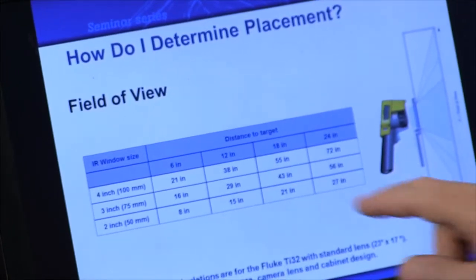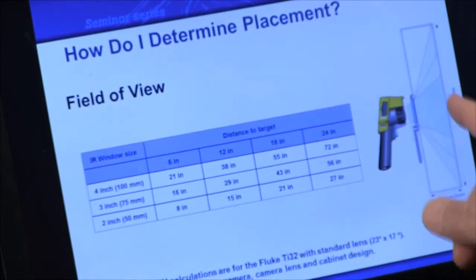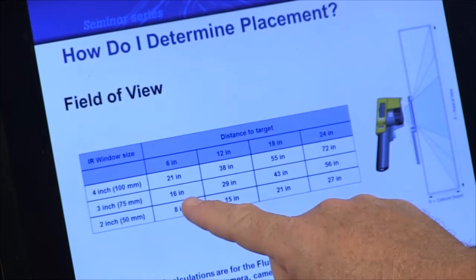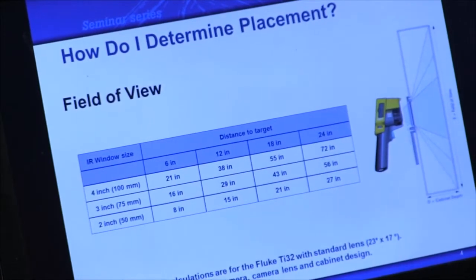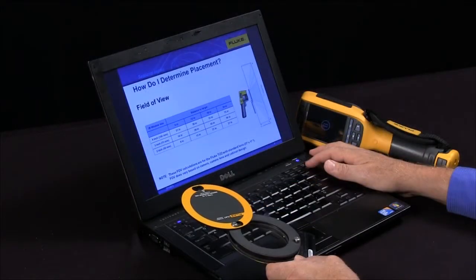So for example, a six inch. If it's six inches from the front of the cabinet to where your target is, then with a three inch window you'll be able to see 16 inches from top to bottom or side to side. If you have 12 inches you can now get 29 inches, and there's a great field of view calculator on the Fluke website that can help you as well.